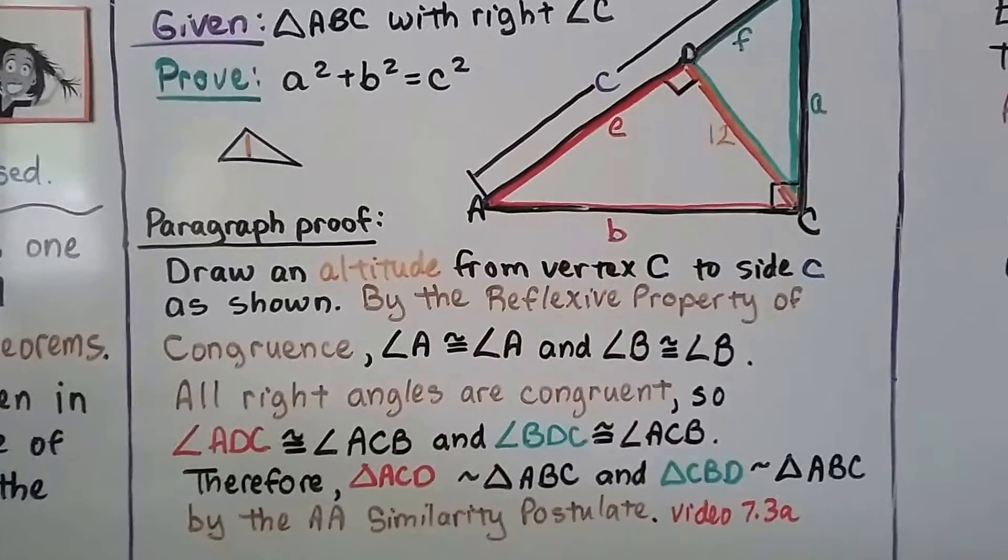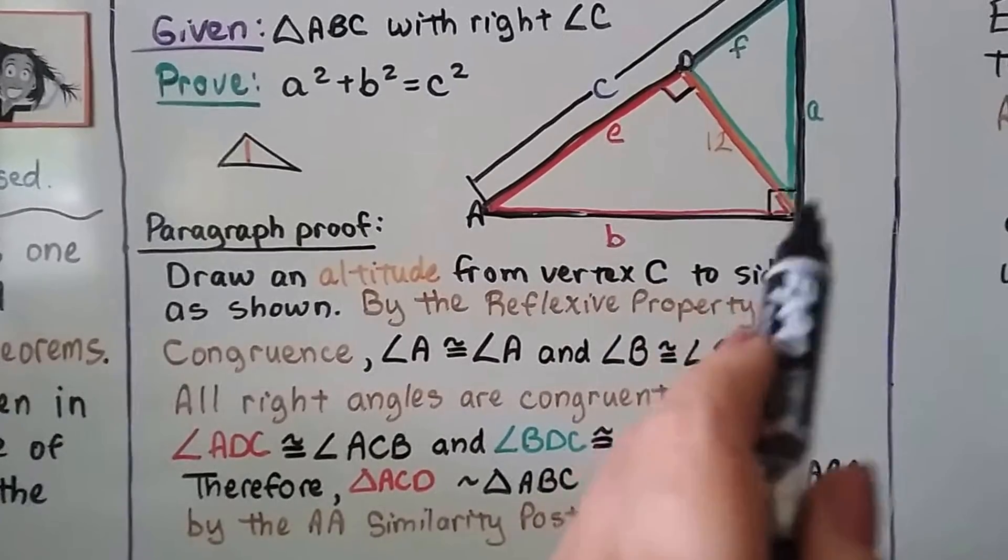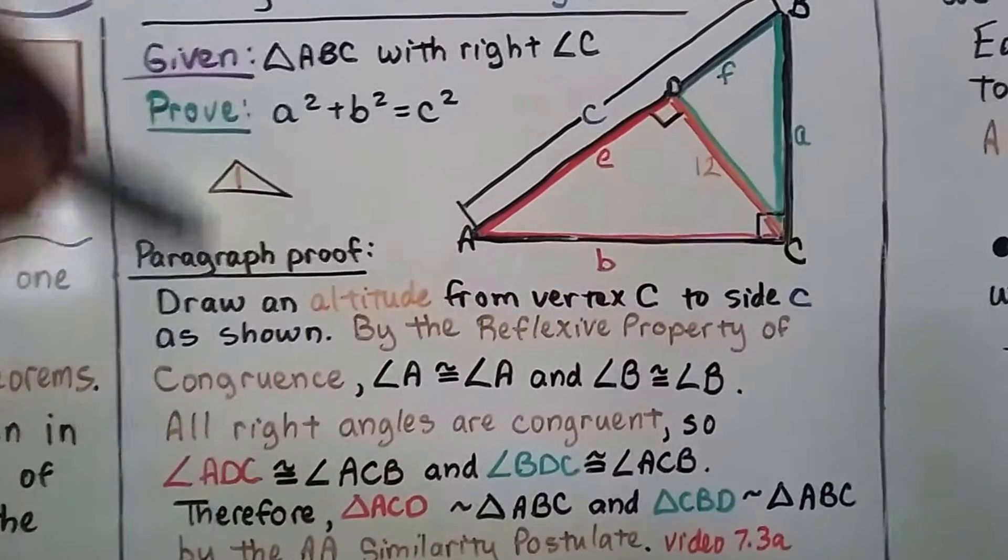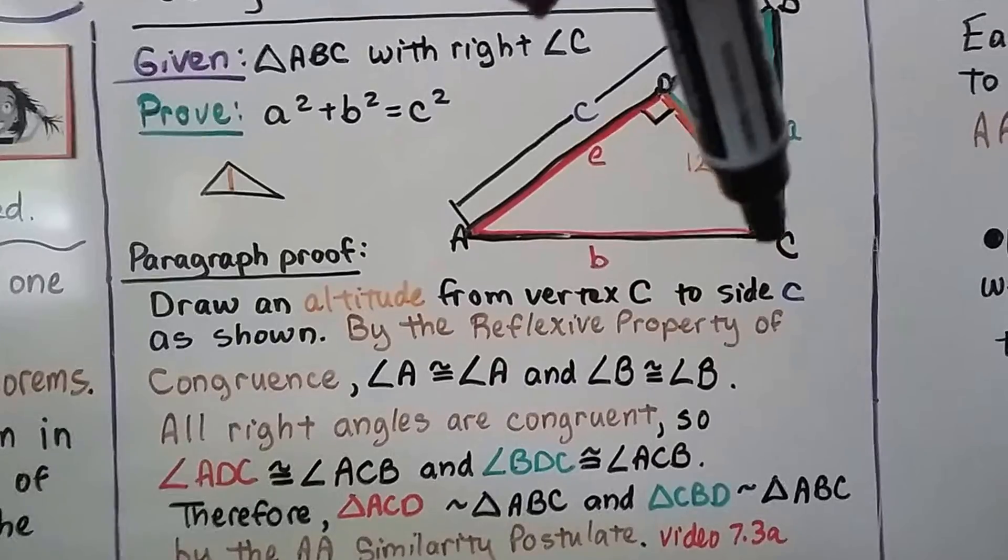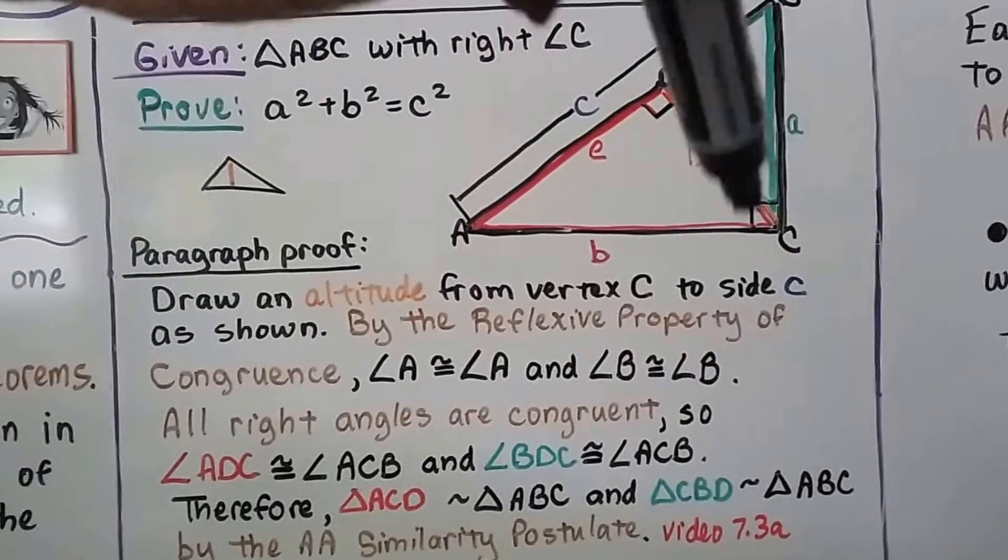So angle ADC, this right angle here, is congruent to ACB, this big right angle here. And angle BDC, there's a right angle here, is congruent to this big black right angle ACB here.